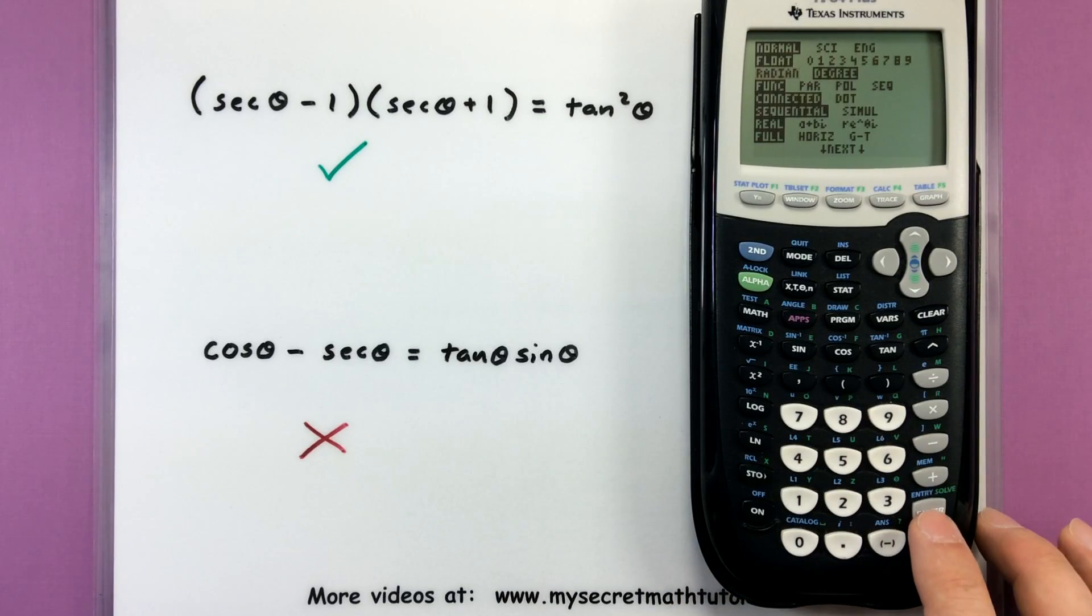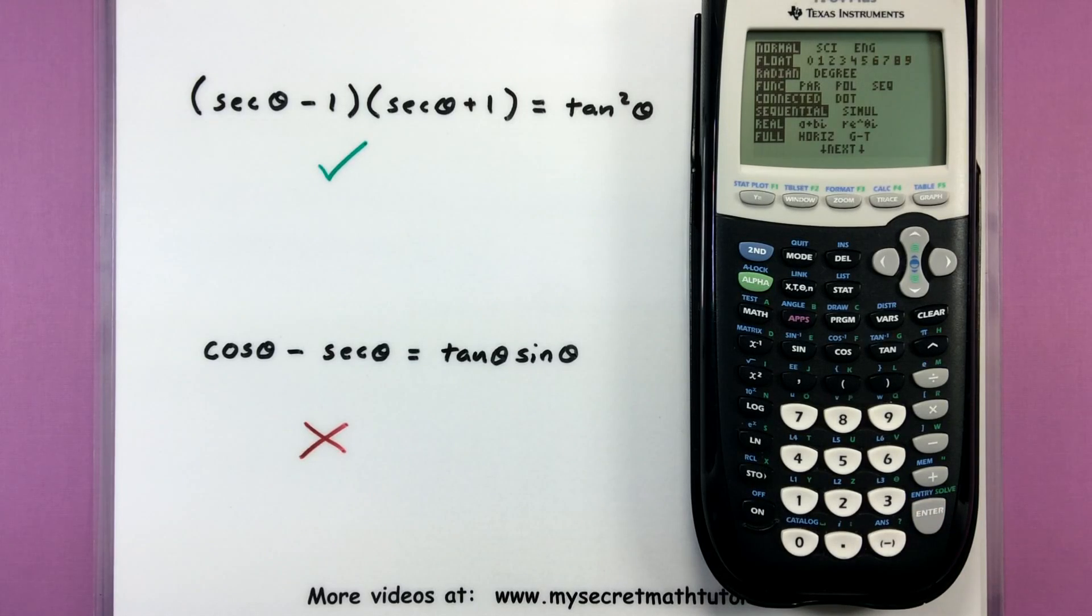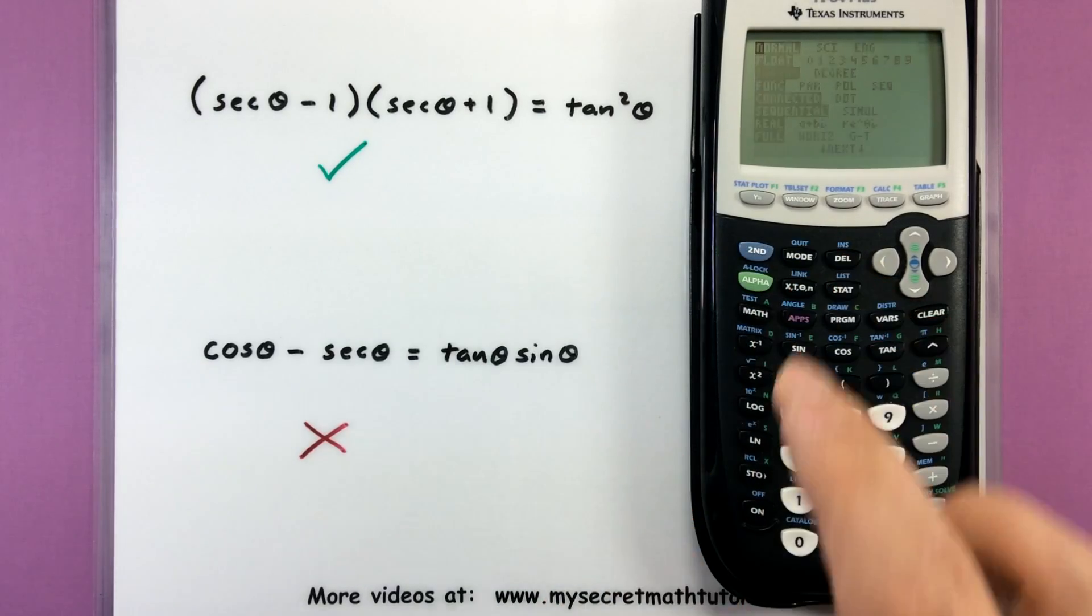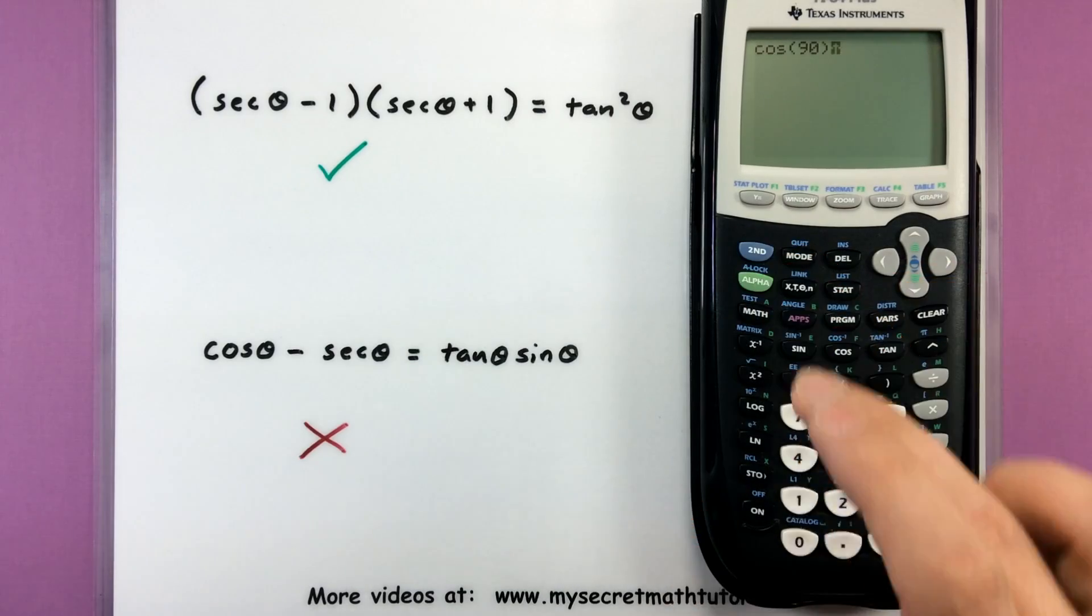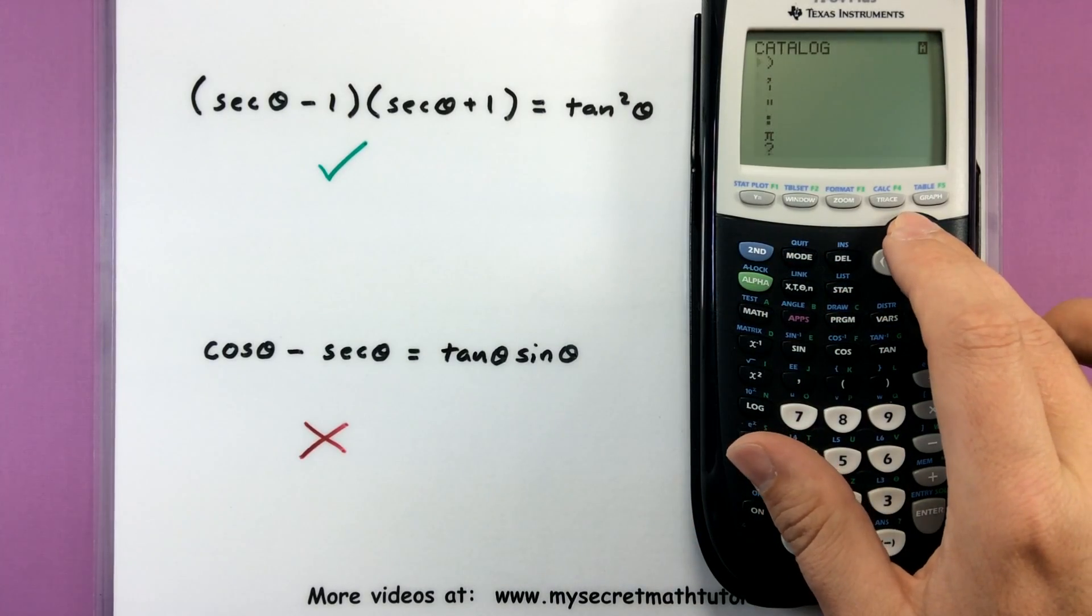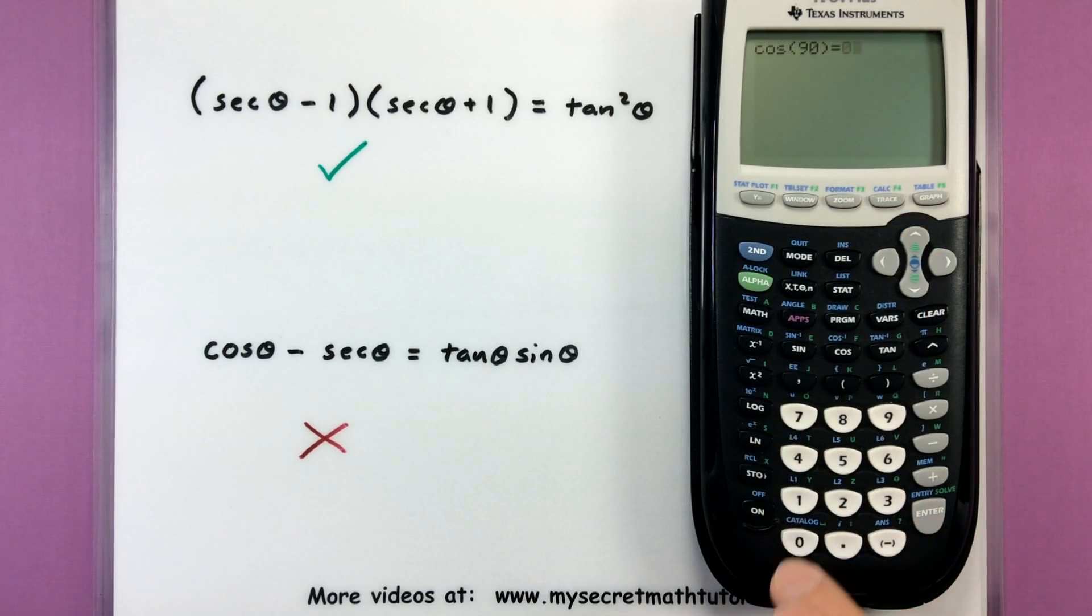For example, let's go ahead and switch my mode over to radian, and watch what happens when I try and verify a value of an angle. Let's go ahead and enter second quit. So for example, maybe I'm trying to figure out what is the value of cosine of 90 degrees. And if I know my angles really well, cosine of 90 degrees should equal zero. So second catalog, check my equals sign in here, equals zero. So this should be true.